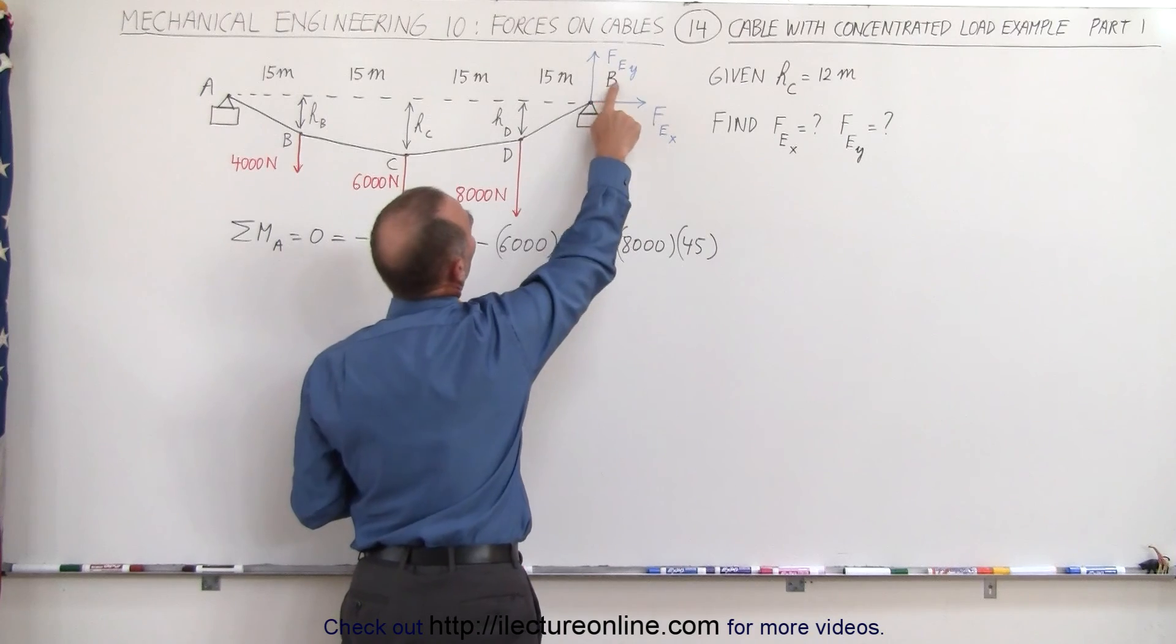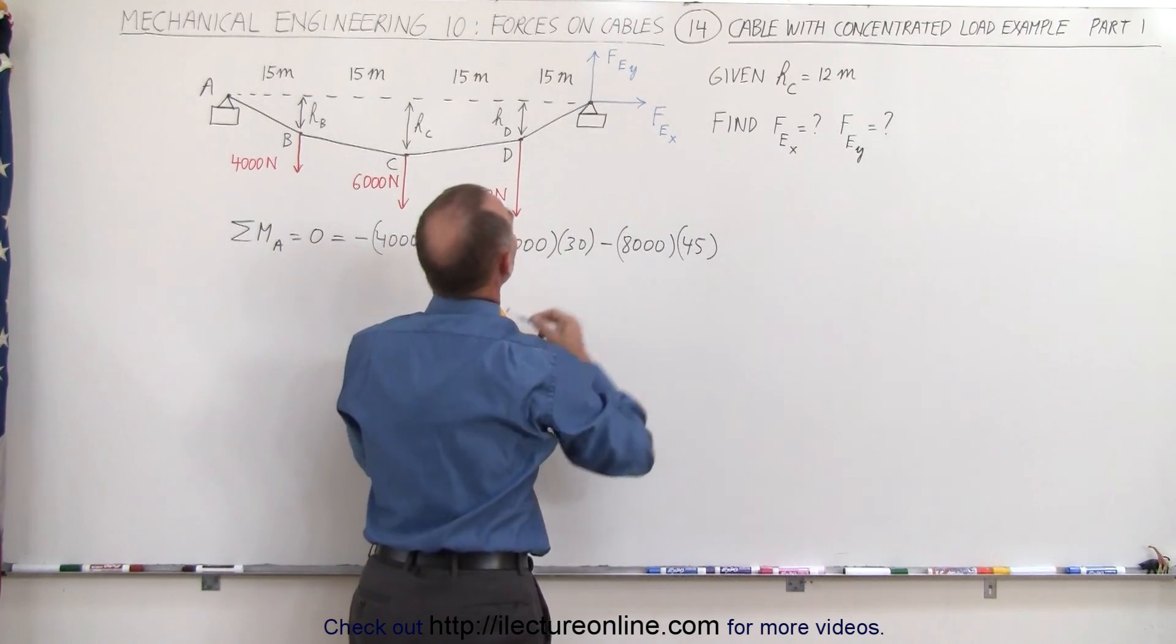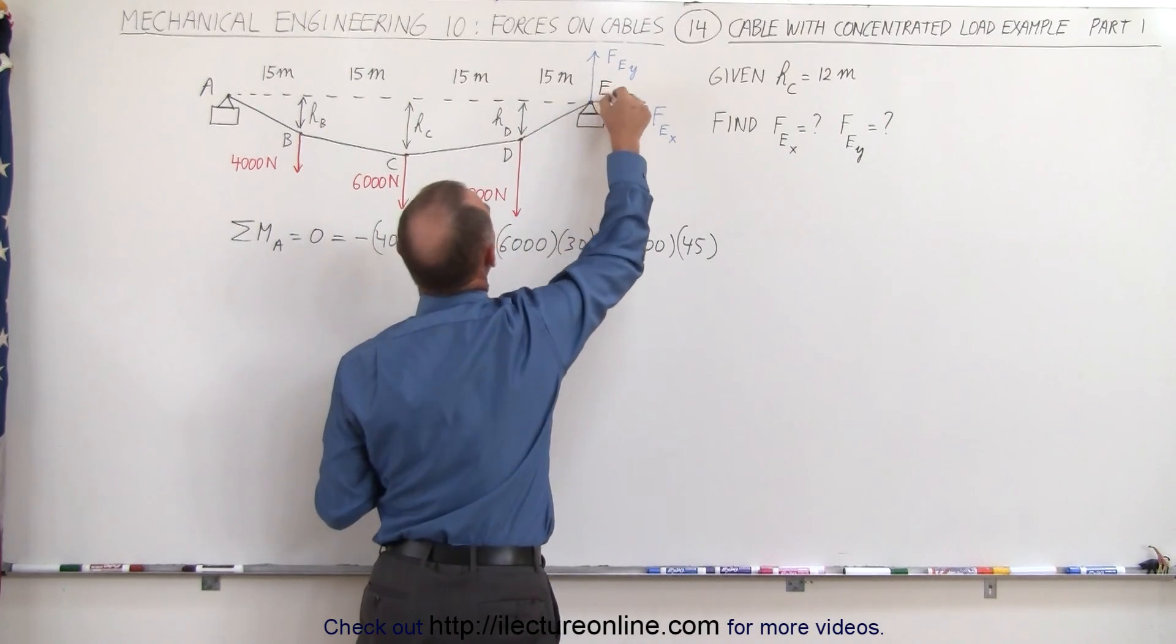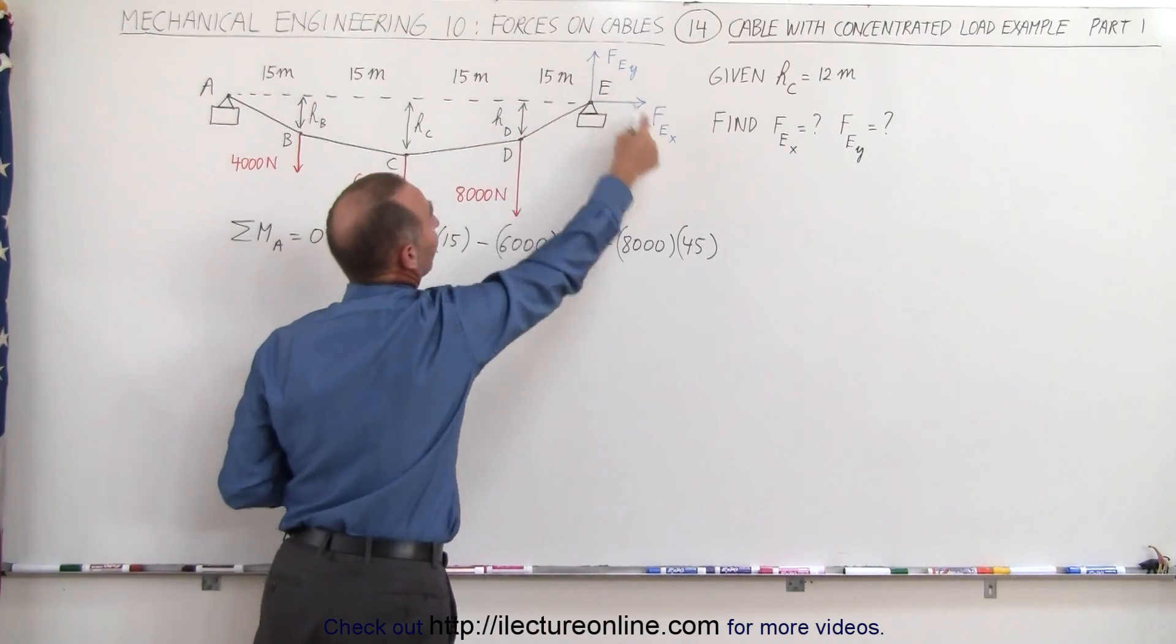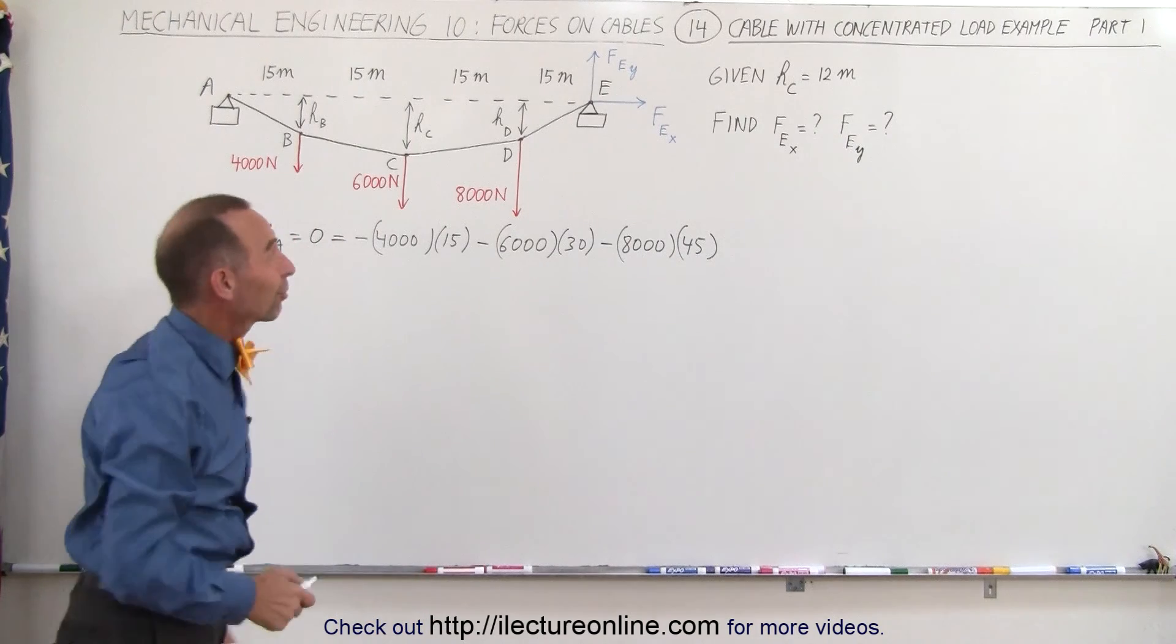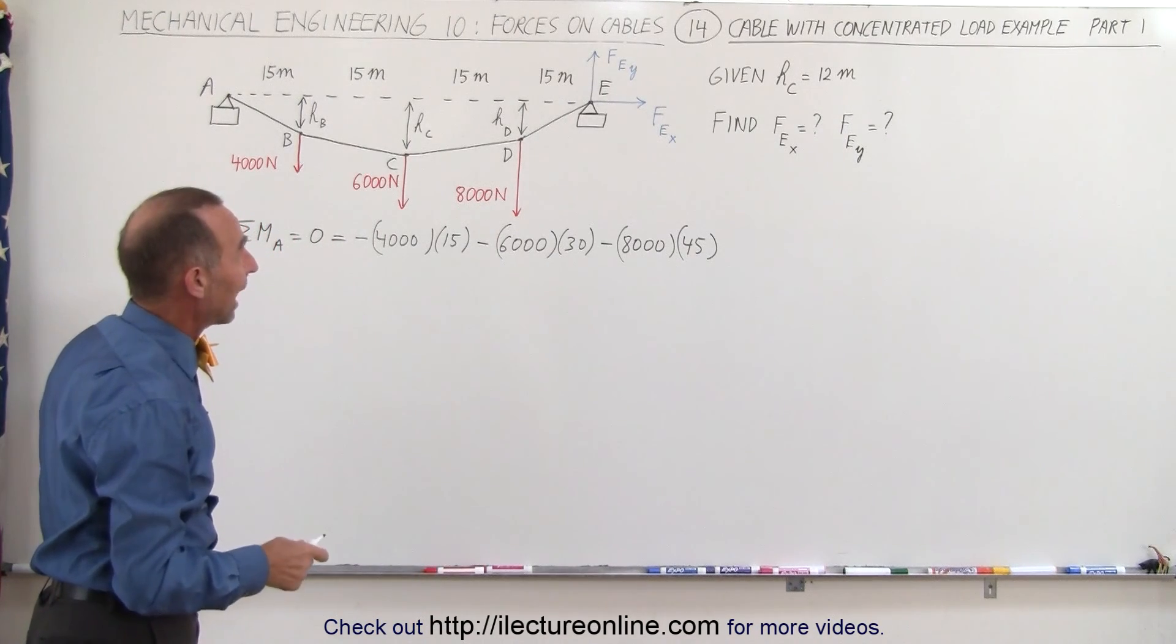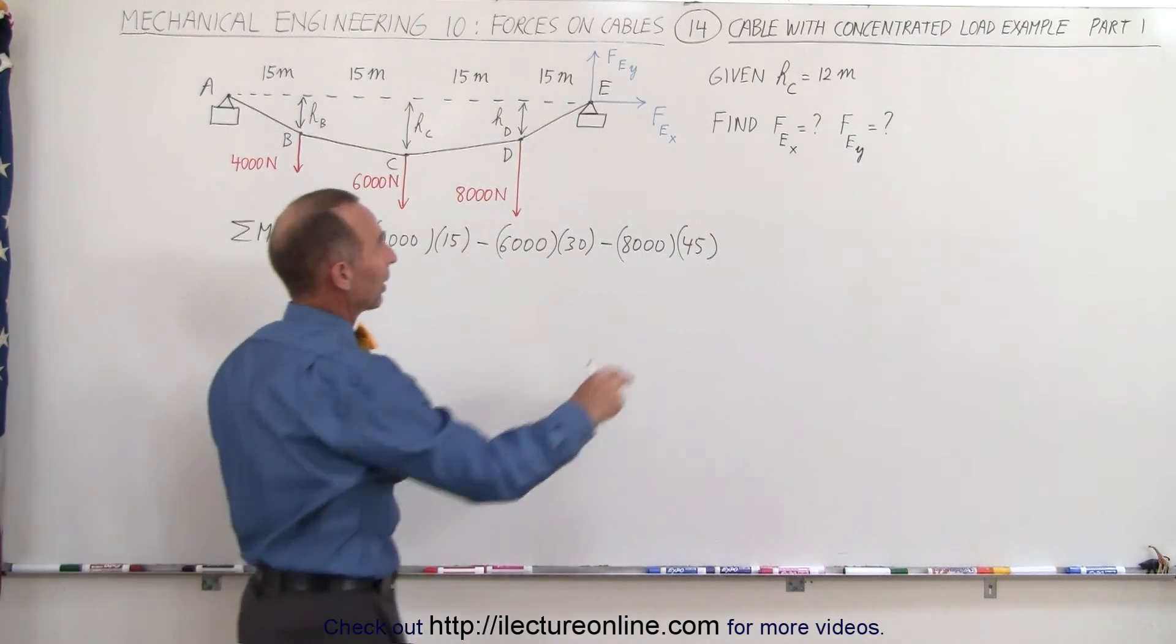And a slight correction here. Notice that this should be E. Normally I call them A and B, but since I went down the line here A, B, C, D, let's call that E because I do have the subscript for the forces at that location as E's, and that's what we're trying to find here.